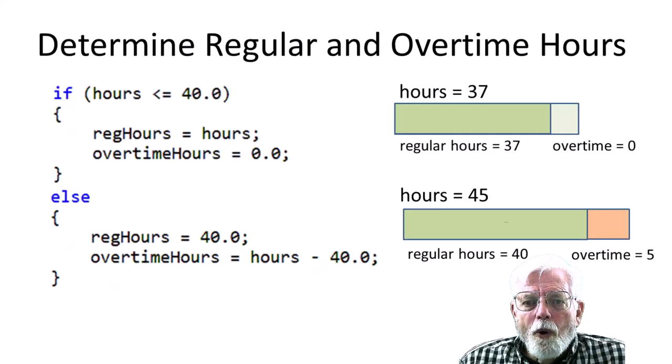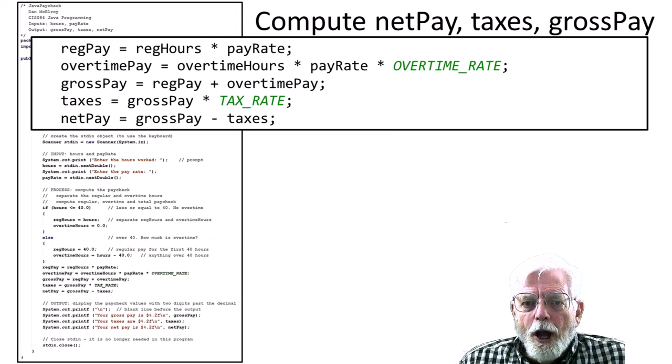If there is no overtime, just set the regular hours to the number of hours worked and the overtime to zero. If there is overtime, the first 40 hours get paid at the regular rate, but anything over 40 gets paid at time and a half. Set the regular hours to 40 and the overtime hours to anything over 40. The computations for reg pay and overtime pay are fairly straightforward. Reg pay equals hours times pay rate. Overtime pay equals overtime hours times pay rate times the overtime rate. The overtime rate is from the constant 1.5 at the top of the program.